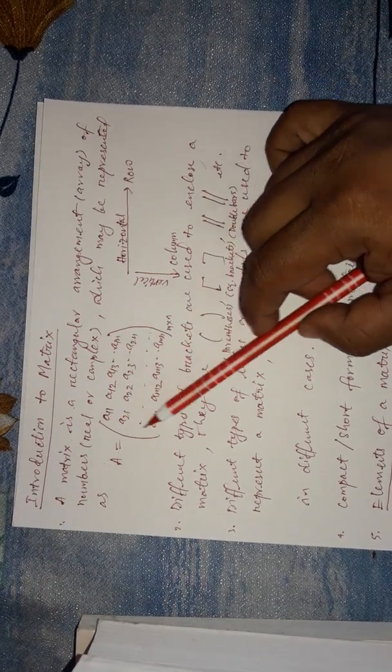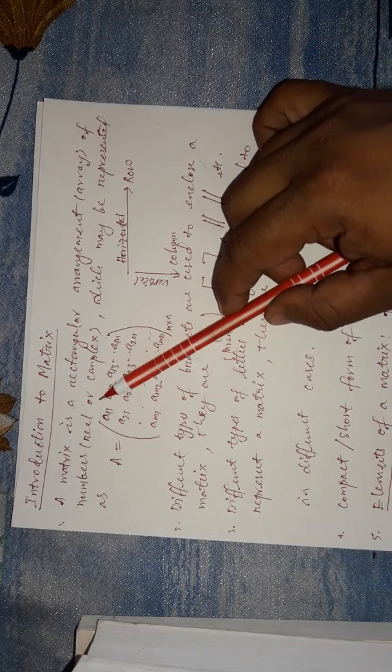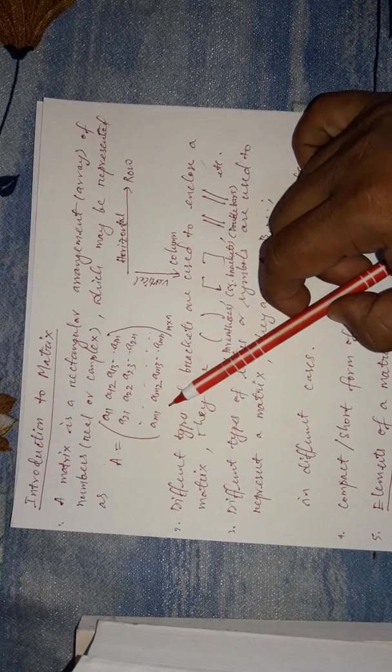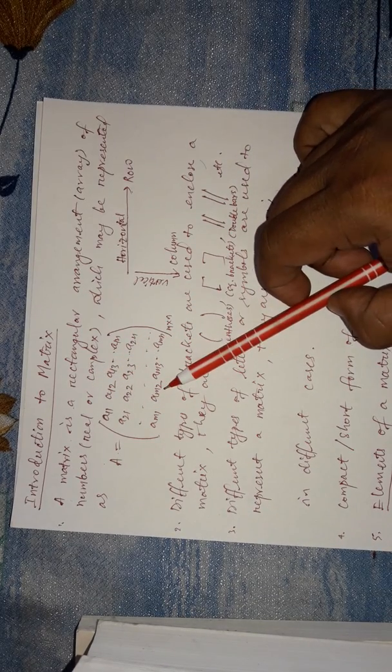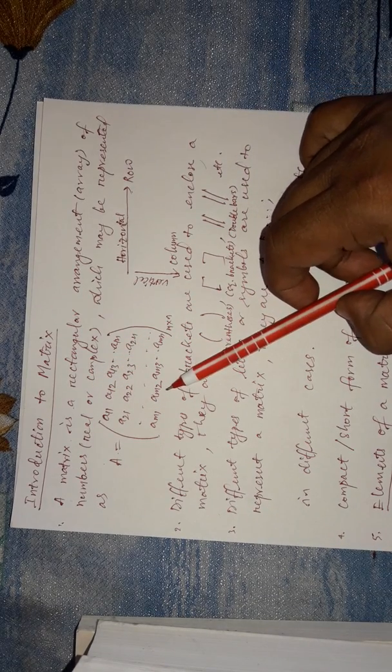So if we are arranging numbers in rows and different columns, it will become a rectangular arrangement, and this is called a matrix. A matrix is nothing but the arrangement of numbers in different rows and different columns.